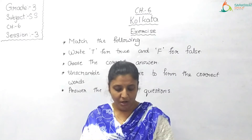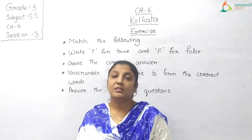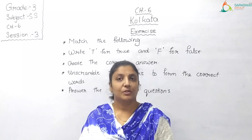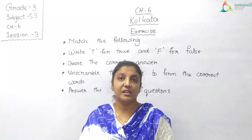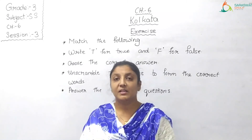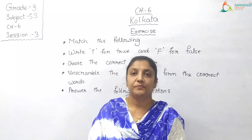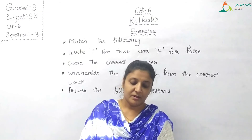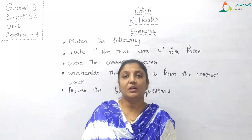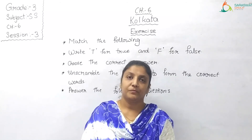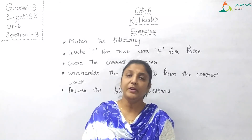C: One of the villages that formed Kolkata. We already saw the three village names in the chapter. The answer is Sutanuti. D: An important fort in Kolkata. The answer is Fort William.